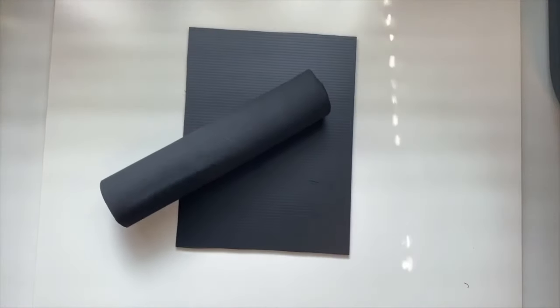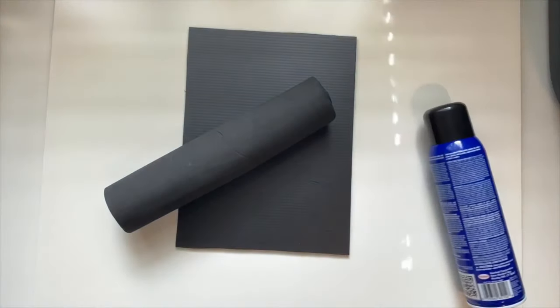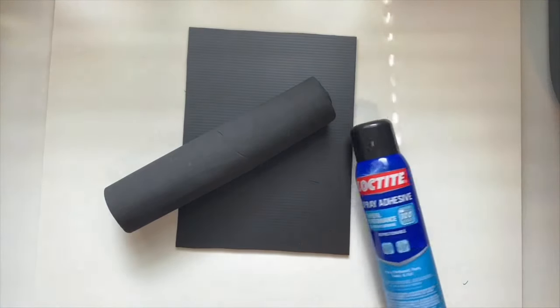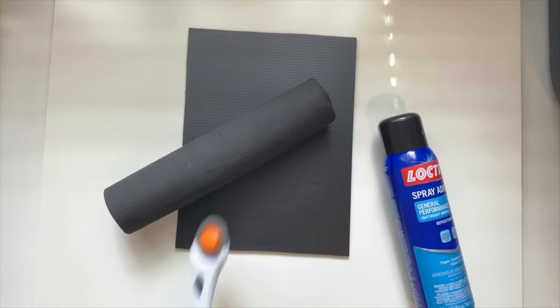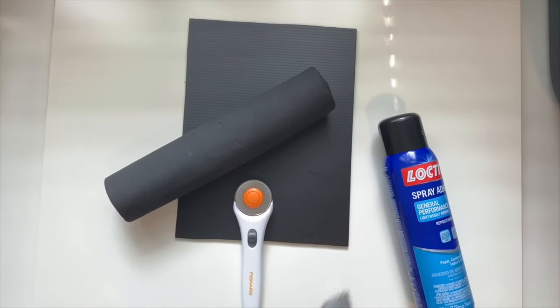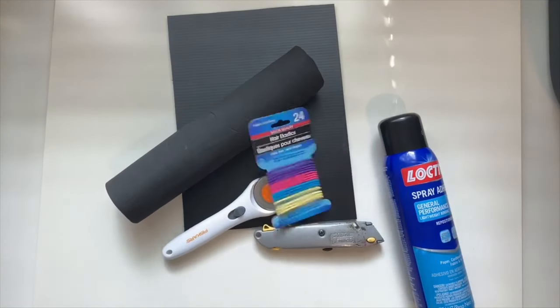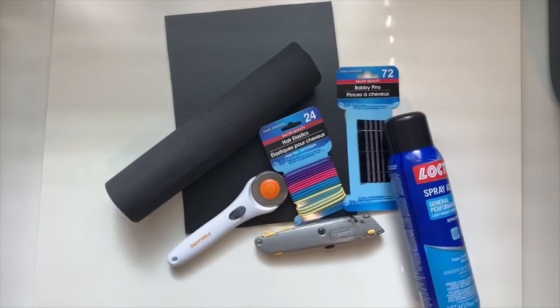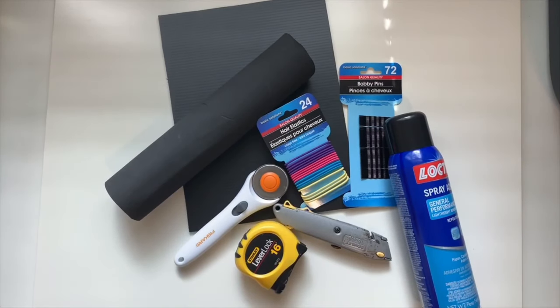I used corrugated plastic, the kind you use for signs and stuff like that. I also used EVA foam and some spray adhesive to stick the EVA to the corrugated plastic. Of course we need cutting tools, some extra stuff like pins to stick them together, and a ruler.